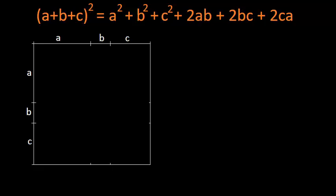So as you can see I have already drawn a square whose one side is equal to a plus b plus c. You can see the markings also. I have marked the length a till here, after that b and after that c. And vertically also I have marked length equal to a, then equal to b, and then equal to c.